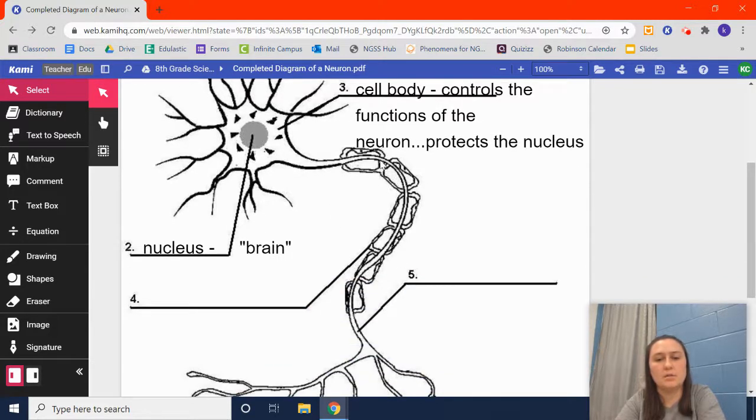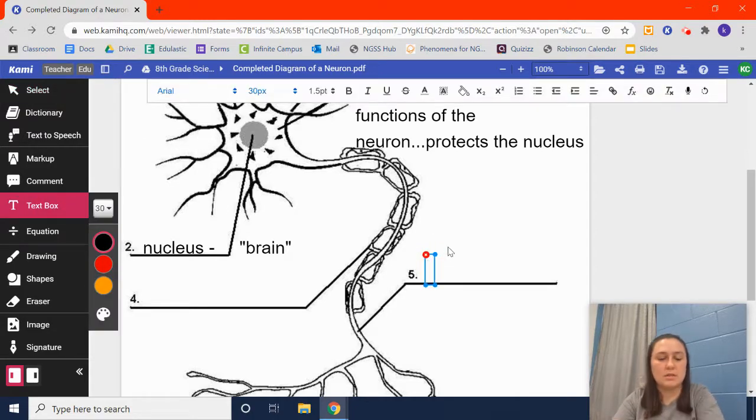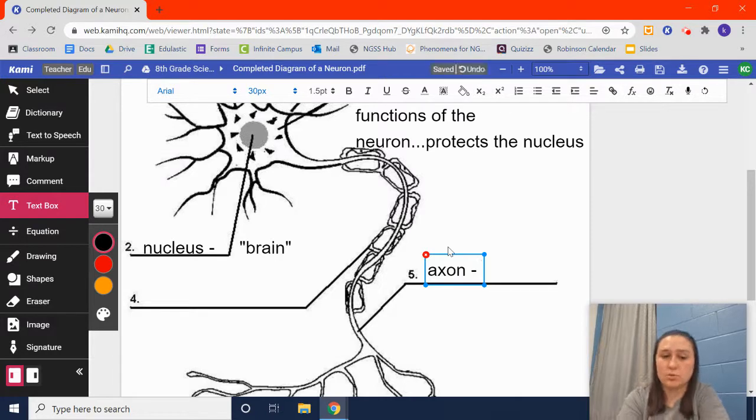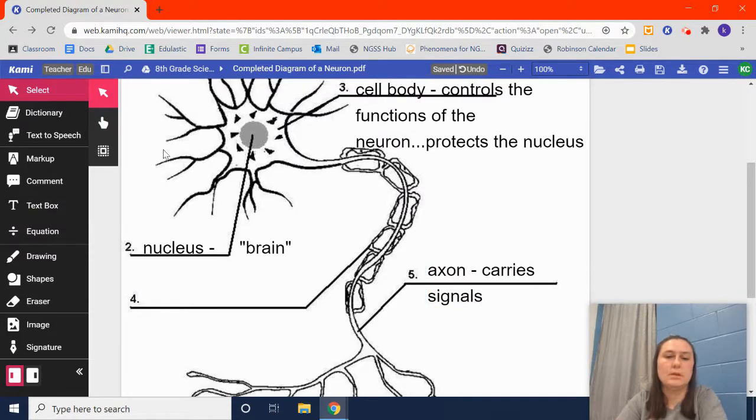This little skinny, windy trail here, number five, that is called the axon. And the axon is pretty much the highway that signals travel, that electrical impulses travel. So, this carries signals.